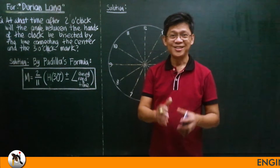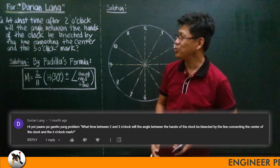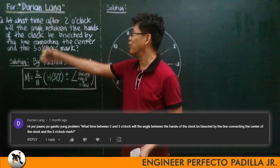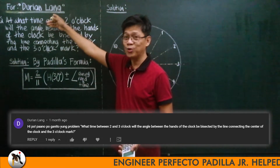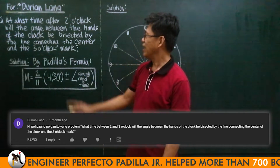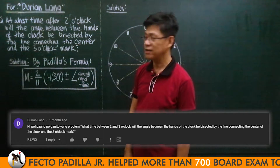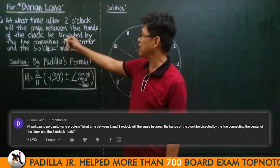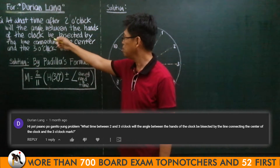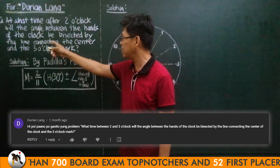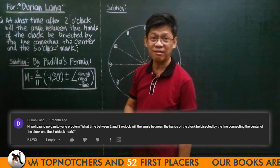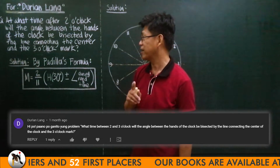Good morning. This is to accommodate the request or question of the Dorian Lang channel: at what time after 2 o'clock will the angle between the hands of the clock be bisected by the line connecting the center and the 3 o'clock mark?